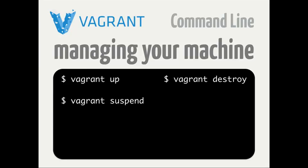There may be times where you want to free up system resources but you don't want to destroy the VM — maybe you've reached the limit of VMs you can run. 'Vagrant suspend' captures the current running state of your virtual machine and writes it to disk. It does take a little more disk space, but everyone has more than they need. Then 'vagrant resume' brings it back to exactly where it was when you left off — very useful when you're juggling a lot of virtual machines.